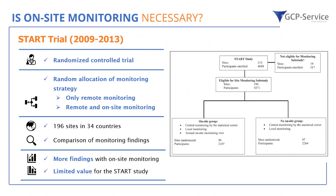Of the 196 sites allocated to monitoring types, there was a comparison at the end identifying whether there were more monitoring findings when only remote monitoring was used versus a combination of remote and on-site. Overall, the authors found that there were more findings when people went to the study site and performed on-site monitoring and source data verification. But the things they found were of very limited importance to trial integrity and to patient safety and patient rights. They concluded that the time and money spent on on-site monitoring was not justified based on the outcomes observed.